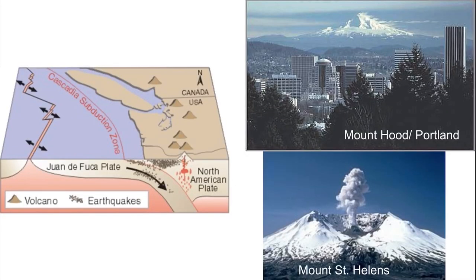An example of this is the Cascade Mountains in the Pacific Northwest, formed as a result of the subduction of the Juan de Fuca plate below the North American plate. Many famous American volcanoes are found in this region — for example, Mount Hood, seen here from the city of Portland looking very majestic, and Mount St. Helens after its famous eruption, with that huge depression formed by the explosion blowing away all of the material.